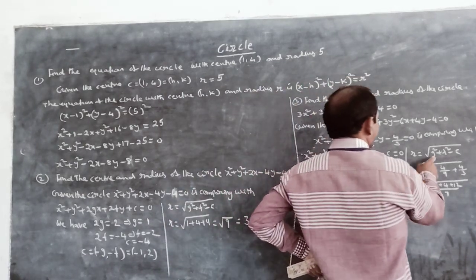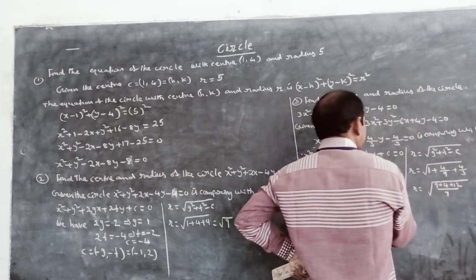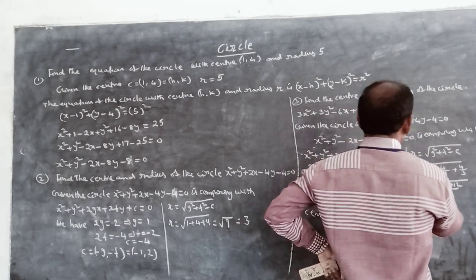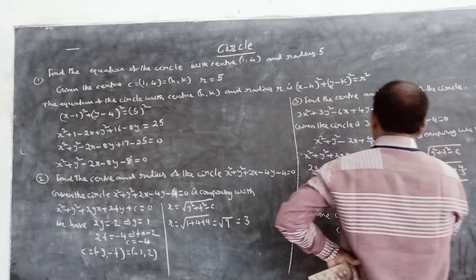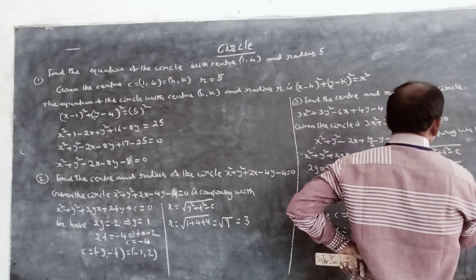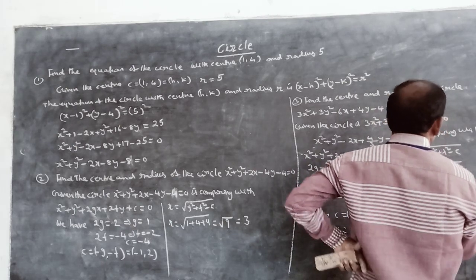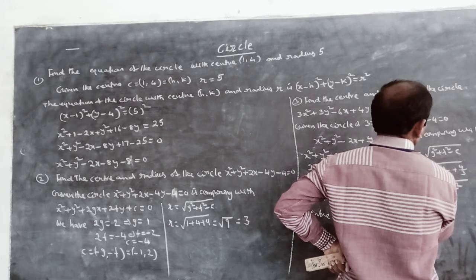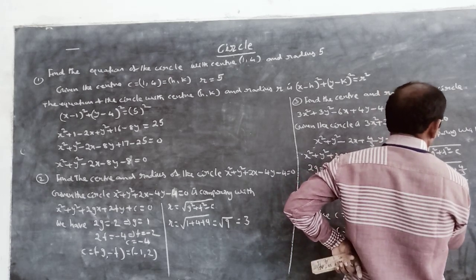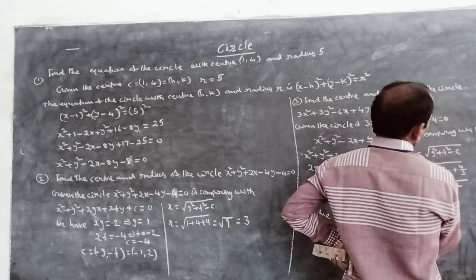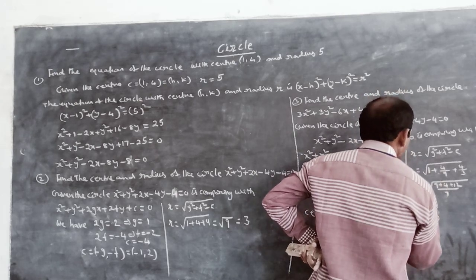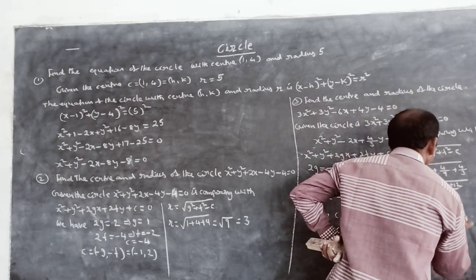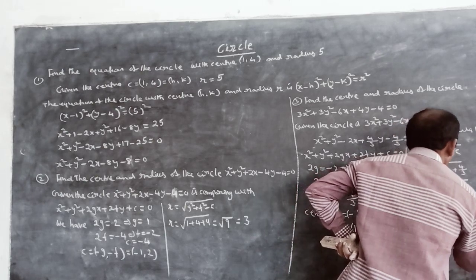Radius r is equal to square root of g square plus f square minus c. Substituting: g is minus 1, so g square is 1. f is 2 by 3, so f square is 4 by 9. Minus c is minus of minus 4 by 3, which is plus 4 by 3. So r equals square root of 1 plus 4 by 9 plus 4 by 3. Finding common denominator of 9: 9 by 9 plus 4 by 9 plus 12 by 9 equals square root of 25 by 9, which equals 5 by 3.